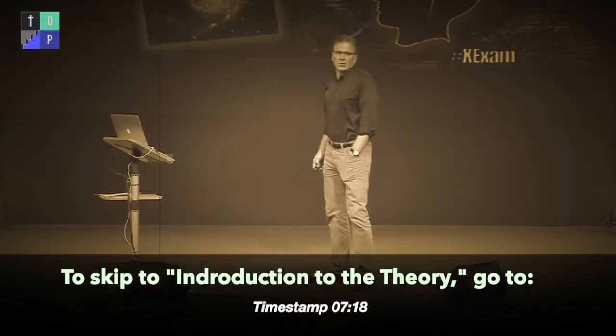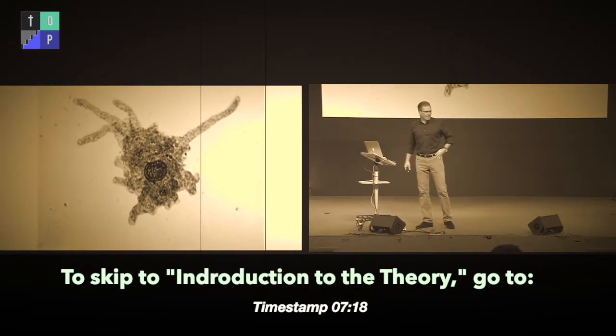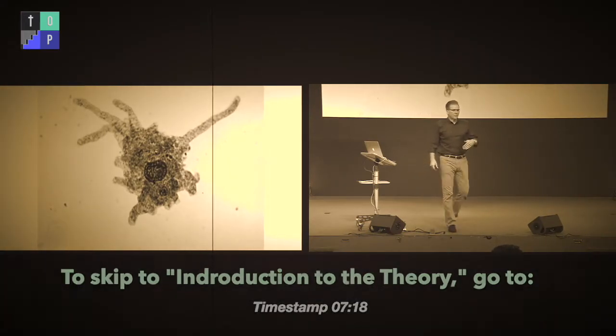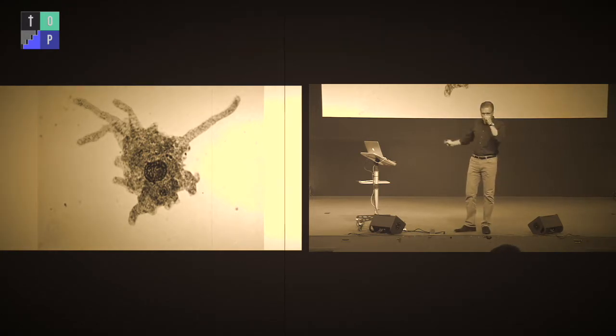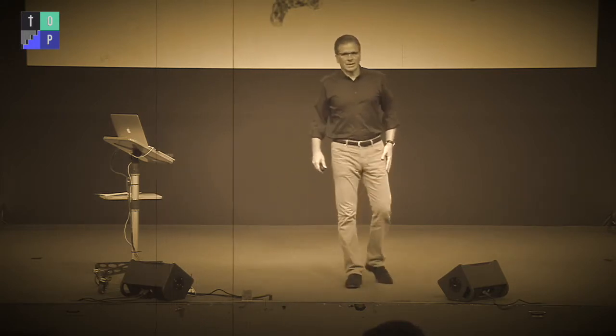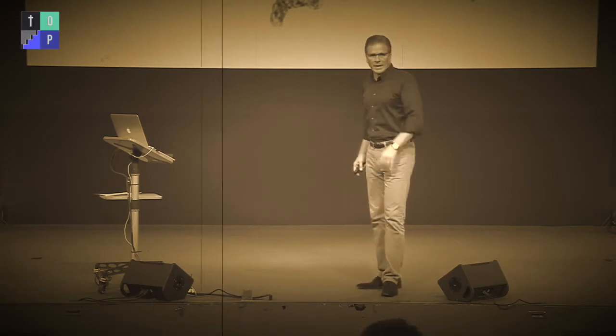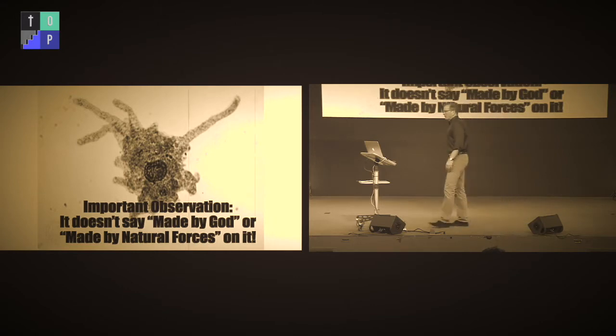Last video we talked a little bit about evolution, so let's recap in 30 seconds what we talked about last time. Apparently, according to evolutionists, we all came from a one-celled amoeba — the theory of macroevolution, from the goo to you via the zoo. In Darwin's day, they didn't really know how complex a cell was. Notice it doesn't say 'made by God' or 'made by natural forces' on it — when you observe something like an amoeba, you have to make an interpretation as to how that amoeba arrived.